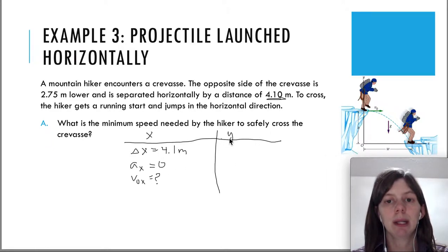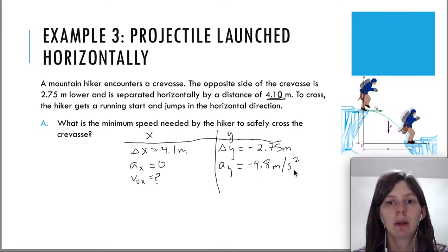We move on to the y-direction. It says that the opposite side is 2.75 meters lower. So that's how far down we have to travel. That's going to be delta y. However, be very, very careful. If you're traveling down, displacement is a vector. You need that negative to indicate that you're going down. And we also have the acceleration. Ay is negative 9.8 meters per second squared. And we also know that the initial velocity in the y is 0 because we jumped horizontally.